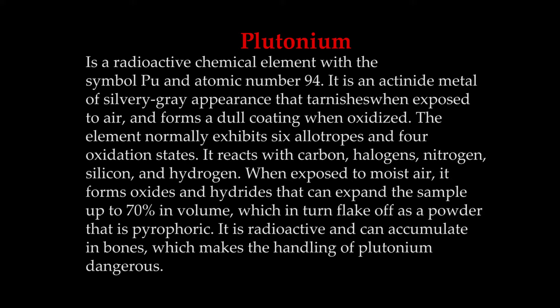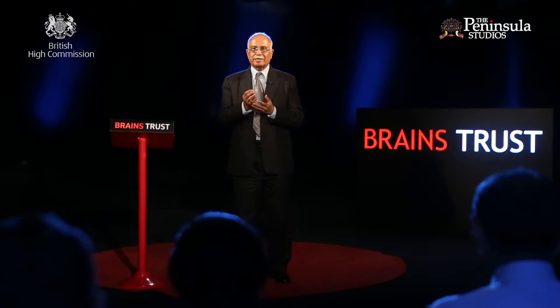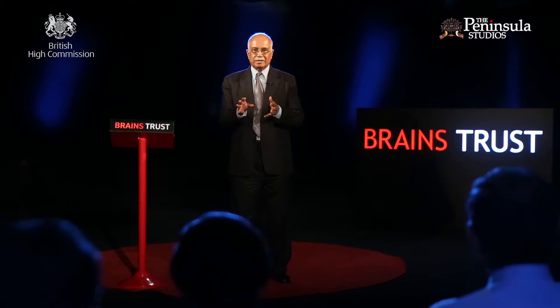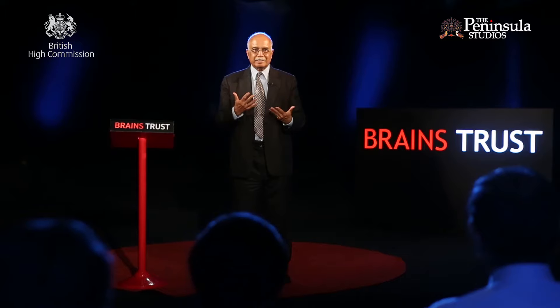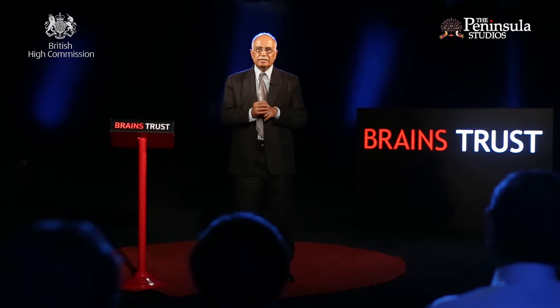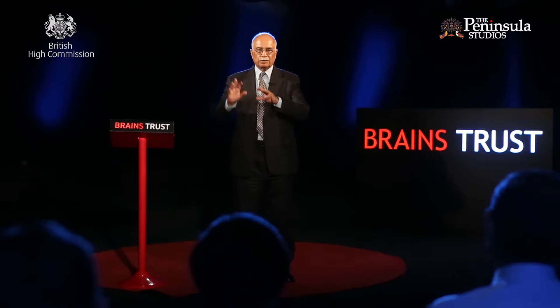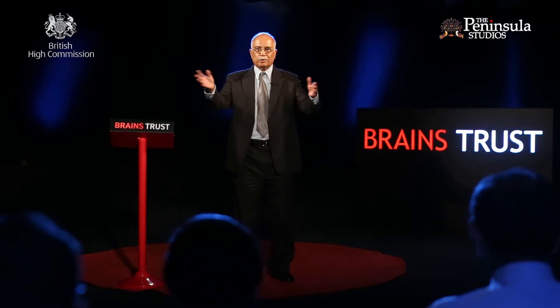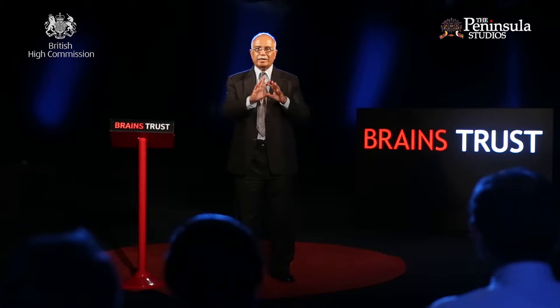Each fission reaction gives out a certain amount of energy, but that energy cannot even light a light bulb because the nucleus is such a small thing. To make up for it, we do have zillions of nuclei in a chunk of matter — bigger than anything you can think of, 10 to the 20 or something. If you could get all of them to undergo fission together, you will get huge energy. Some way has to be found of making them all fiss together or almost together. That is done by something called the chain reaction.